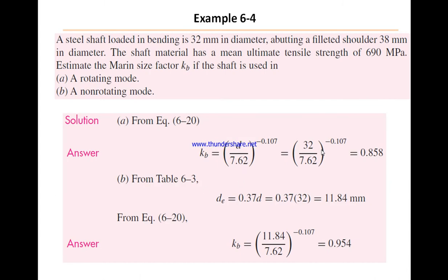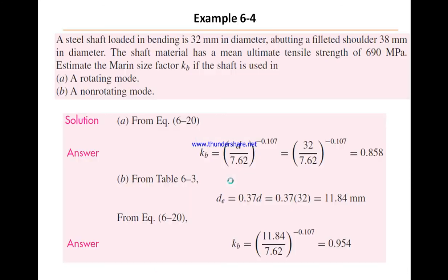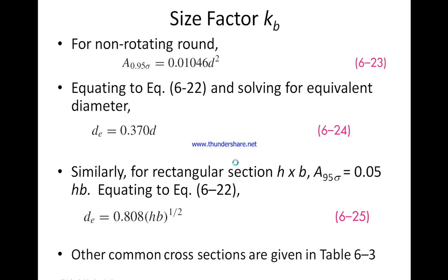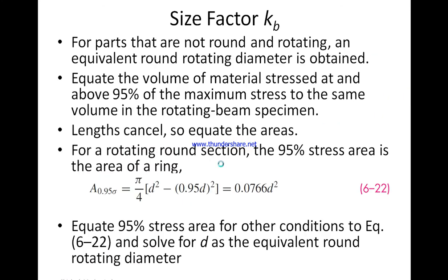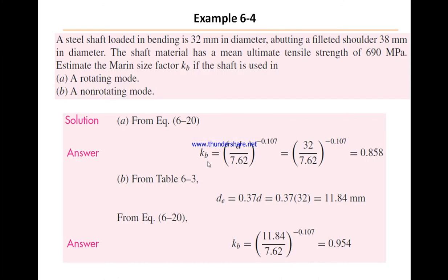If it is a non-rotating mode, as it is a shaft we have de equal 0.37 times 32, which is 11.84 mm. We take this value back to the original equation. So we apply the equation with de equal to 11.84, which gives kb equal (11.84/7.62)^(-0.107) equals 0.954. This is the size factor Marin factor.